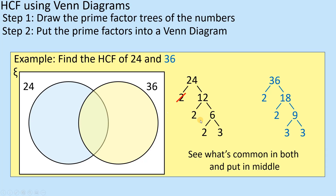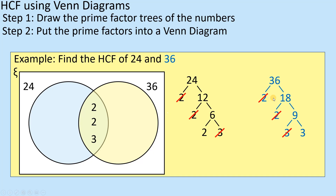So there are two 2s and a 3 in both of these, so they're going to go into the middle. You've got the two 2s in both going in the middle, and the 3 goes in the middle too — they're common in both. So 2, 2, 3 go in the middle. Now I've got an extra 2 in 24, so that goes over here, and I've got an extra 3 in 36, so that goes over there. So I've split 24 and 36 into their prime factors, put what's common in the middle, and the remaining ones go into their own little circles. Because I'm looking for the highest common factor — something that goes into both — I multiply 2 times 2 times 3, which is 4 times 3, which equals 12. That is my highest common factor.